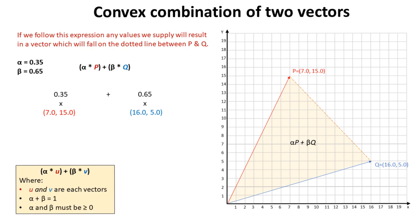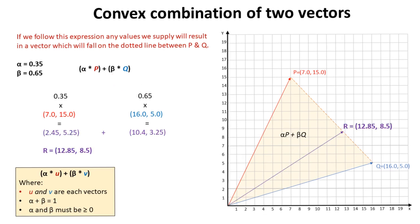So we take 0.35 and times it by the vector P. Well, there's the vector P. And we take 0.65 and times it by the vector Q. This gives us these values here. We then add these together to get a new vector R. So our vector is 12.85 and 8.5, and as we can see when we plot that on our graph, this vector lands directly on the dotted line between P and Q.